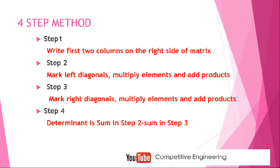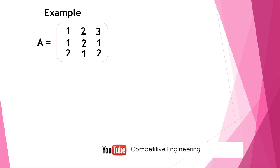I will explain this method with an example. Consider a matrix A equal to 1, 2, 3; 1, 2, 1; and 2, 1, 2. The first step is write the first two columns on the right side of the matrix. That is, the first column 1, 1, 2 is written on the right side, and the second column 2, 2, 1 is written on the right side.